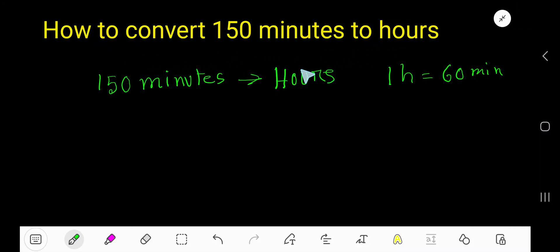How to convert 150 minutes to hours. Let me write 150 minutes like this. To cancel minutes, we'll use this conversion equation: 1 hour equals 60 minutes. We'll write minutes at the bottom so that we can cancel units.